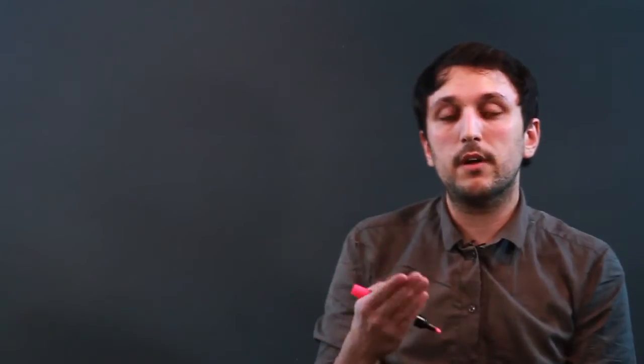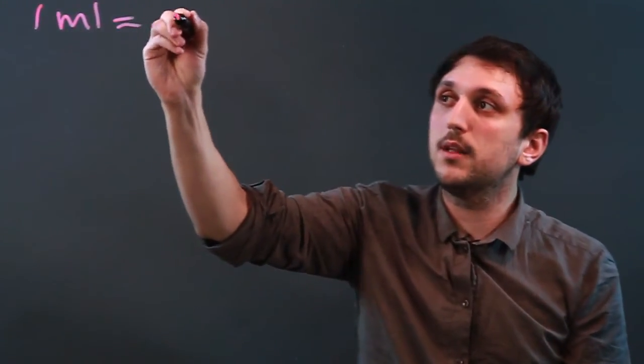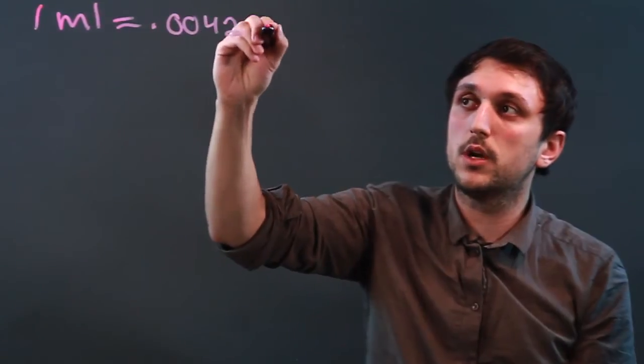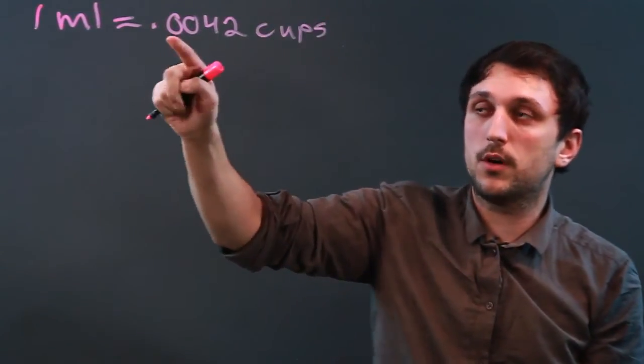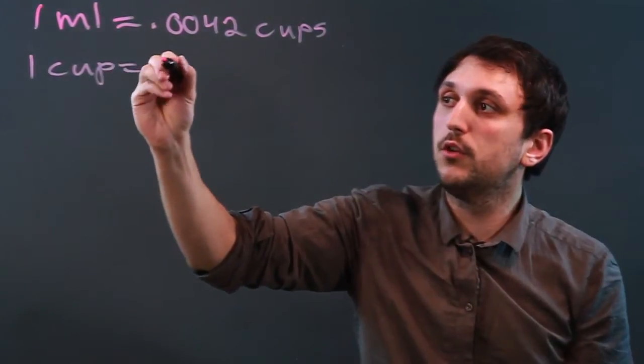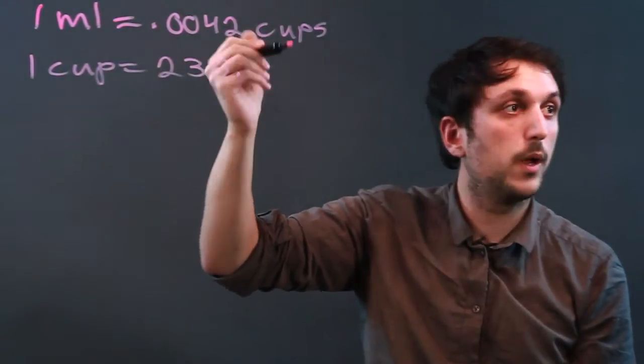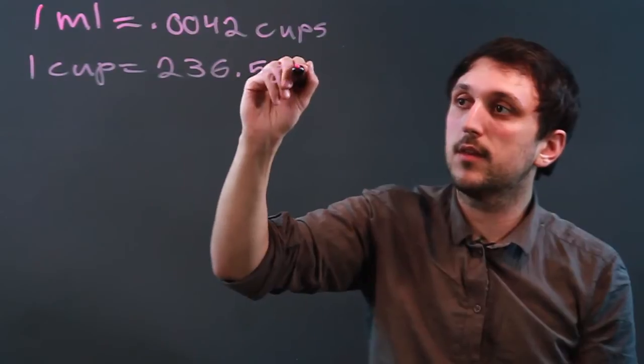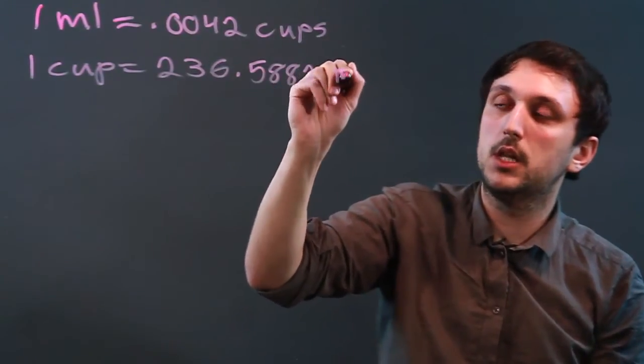A milliliter is a measurement of volume in the metric system, and a cup is a measurement of volume in the American system. So one milliliter equals .0042 cups. So very little cup. One cup equals 236.5882 milliliters.